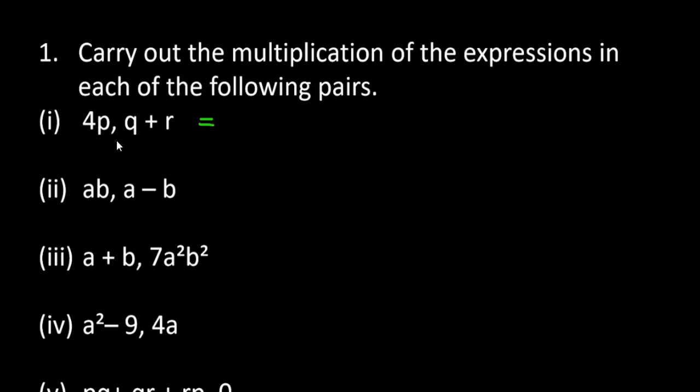You can see we have one pair which is 4p, q plus r. Now you can clearly see that 4p is a monomial term and q plus r is a binomial term. So how do we multiply this? What we will do is we will take the monomial and we will keep the binomial term in bracket. So I will create a bracket around the binomial term. Then we have to multiply this expression. Now what you will do is you will multiply 4p with q first, so it will be 4pq. Then you have to multiply 4p with r, so it will be 4pr. So this is the final answer for the first one.